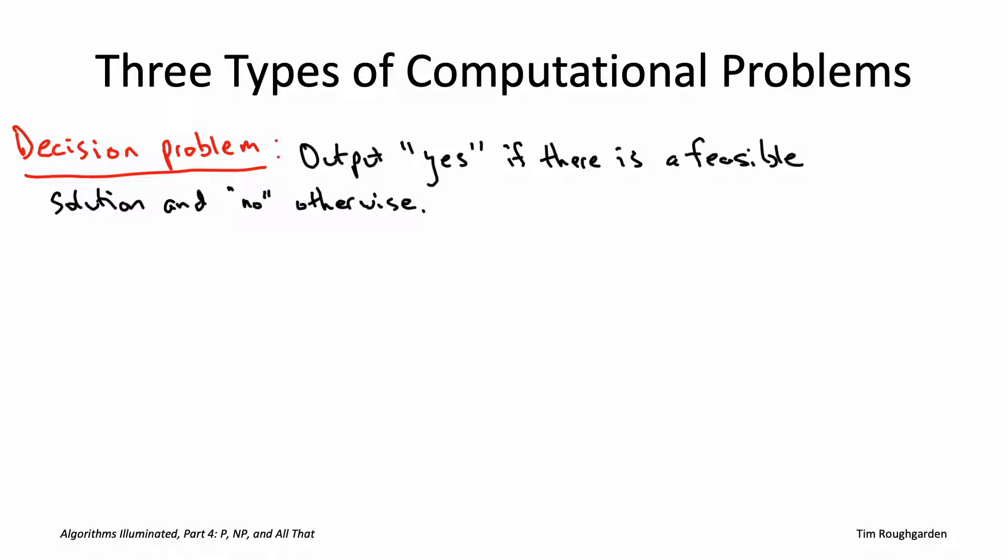Moving on to a category of problems which you do see in applications: search problems. Here, an algorithm's responsibility is given an instance to either hand back a feasible solution or to correctly report that none exist.